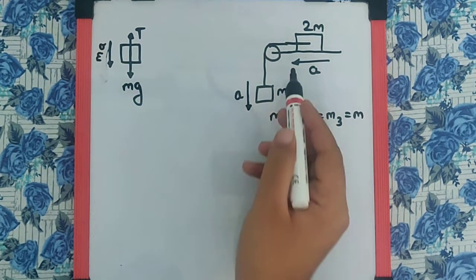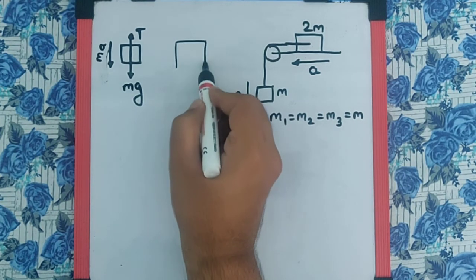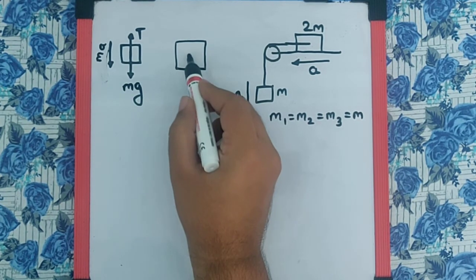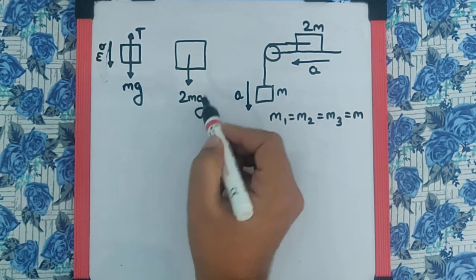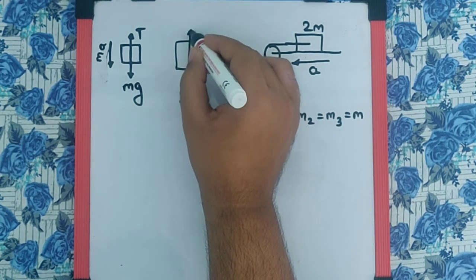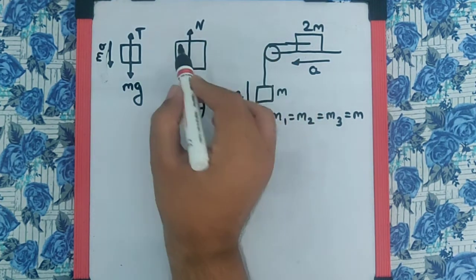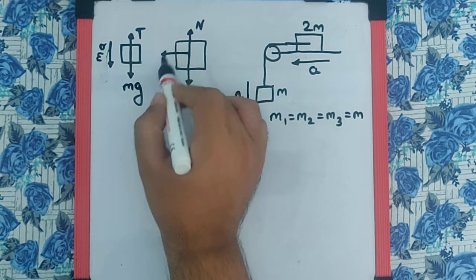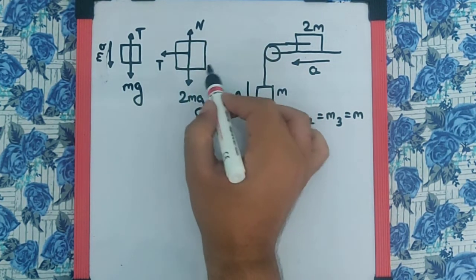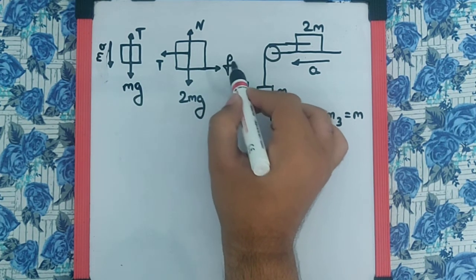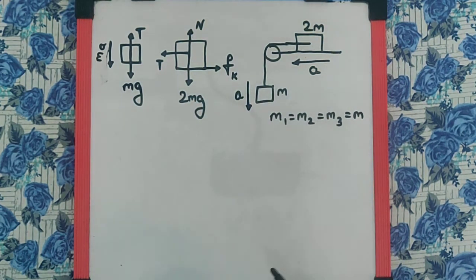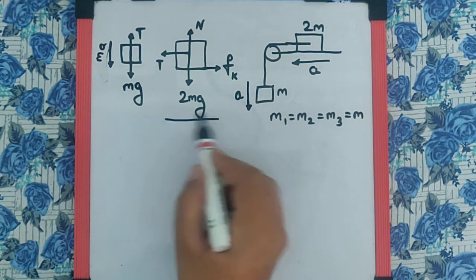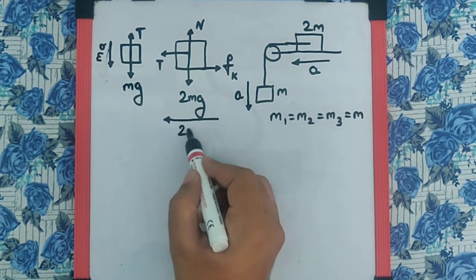And for the 2M mass, there will be 2Mg acting vertically downwards, normal reaction vertically upwards, tension towards the left, and the friction, which is kinetic friction because the body is already in motion with 2MA.